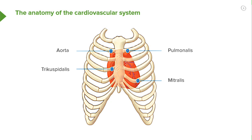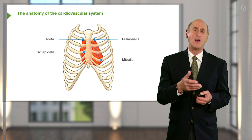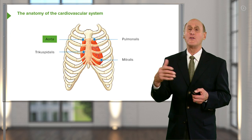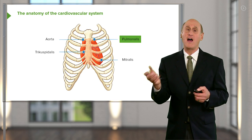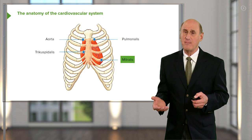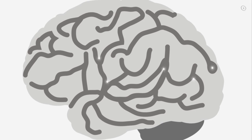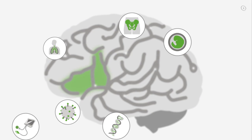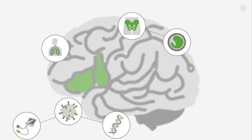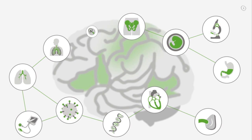And we're going to go over the names of the valves and where they're located, but just for introduction, you can see that they're the aortic valve, the pulmonic valve, the tricuspid valve, and the mitral valve.